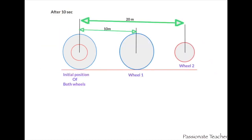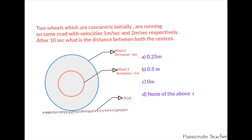This is the initial position of both wheels. After 10 seconds, as we calculated, wheel 1 covers 10 meters and wheel 2 covers 20 meters. The gap between both centers is 20 meters minus 10 meters, which is effectively equal to 10 meters. So the final answer is option D, that is none of the above, not option C.